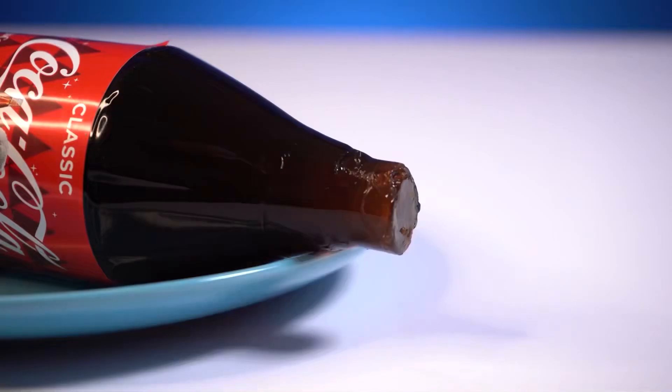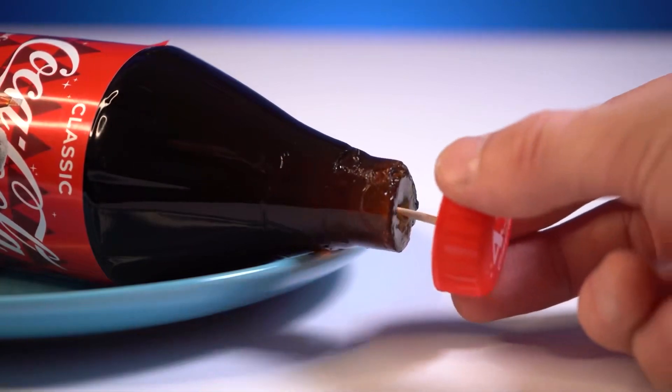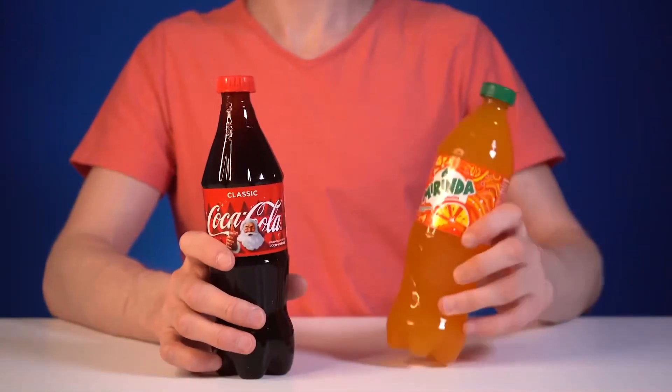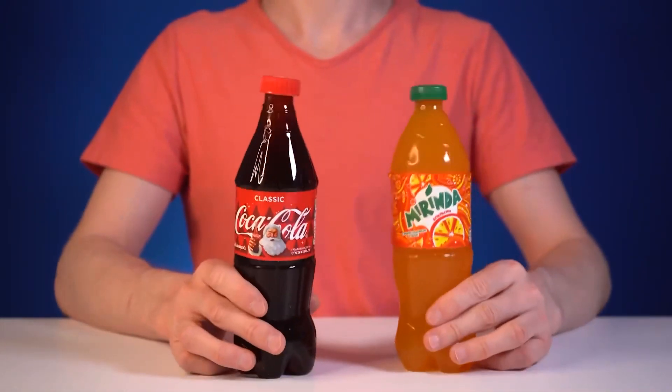Now, carefully remove the plastic from our gelatin bottle and put a label on it. And the cork was still on the toothpick. Here's such a jelly cola turned out. We also made a jelly Mirinda. And yes, they are very tasty.